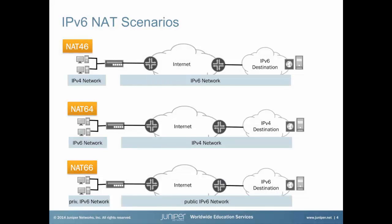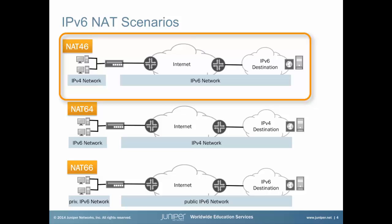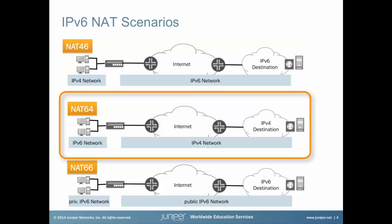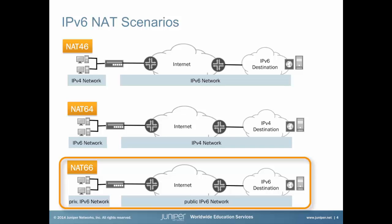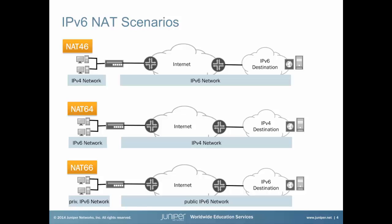Nowadays there are three basic NAT scenarios out there. NAT46, which translates connections from IPv4 to IPv6 destinations. NAT64, which translates connections for IPv6 clients that need to connect to IPv4 servers. And ultimately, NAT within the same address family, like NAT66 or NAT44. Of course, all those scenarios can be hierarchically mixed and stacked — for example, NAT444 or NAT464.